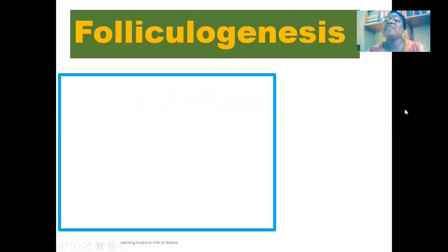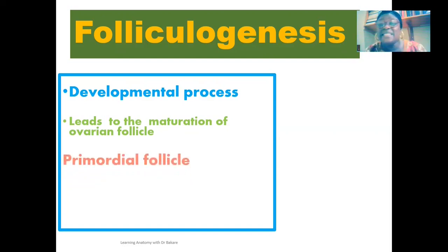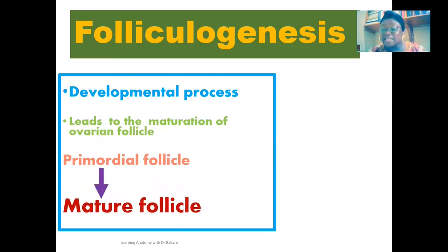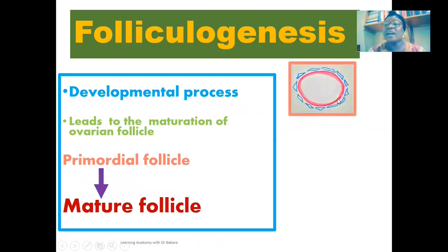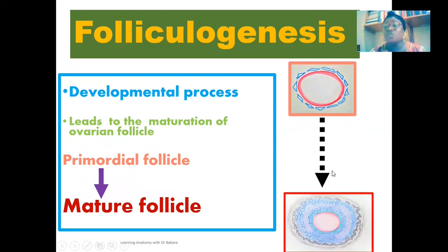Folliculogenesis is a developmental process that leads to the maturation of an ovarian follicle. We have the ovarian follicle at the primordial stage, which is the embryonically derived ovarian follicle, and this undergoes a process referred to as folliculogenesis to become the mature ovarian follicle, as shown in the image here.